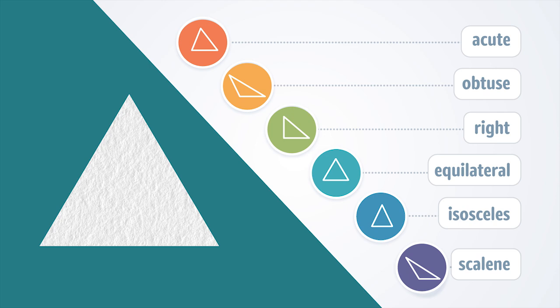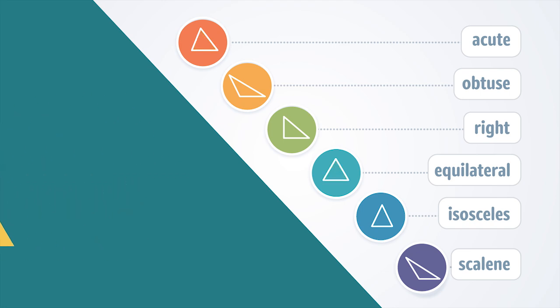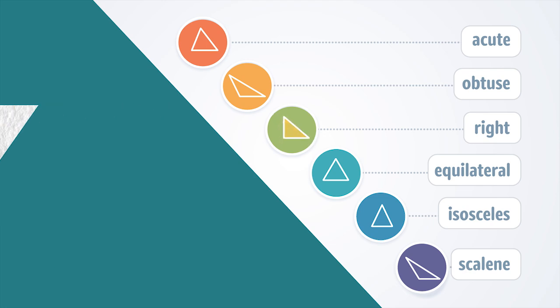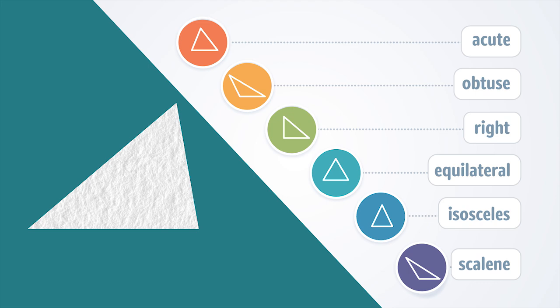What type of triangle is shown here? This triangle has three equal sides and three equal angles — it is an equilateral triangle. It is also an acute triangle because all three angles are less than 90 degrees. What do you notice about this triangle? It has a 90 degree, or right, angle — it is a right triangle. What type of triangle is shown here? Notice that it has no equal sides or angles — it is a scalene triangle. It is also an acute triangle because each of the three angles is less than 90 degrees.